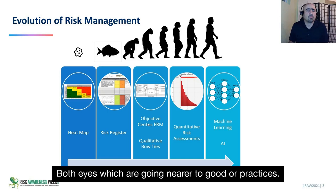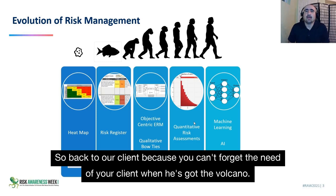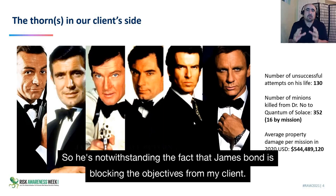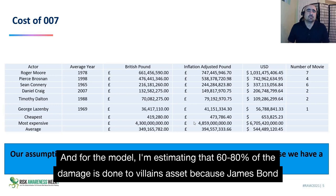Back to our client — because you can't forget the needs of your client when he's got the volcano. That's a lot of money going that way: more than half a billion dollars on average. Notwithstanding the fact that James Bond is blocking the objective, for the model I'm assuming that 60 to 80 percent of the damage is done to the villain's assets, since James Bond is also destroying public property.